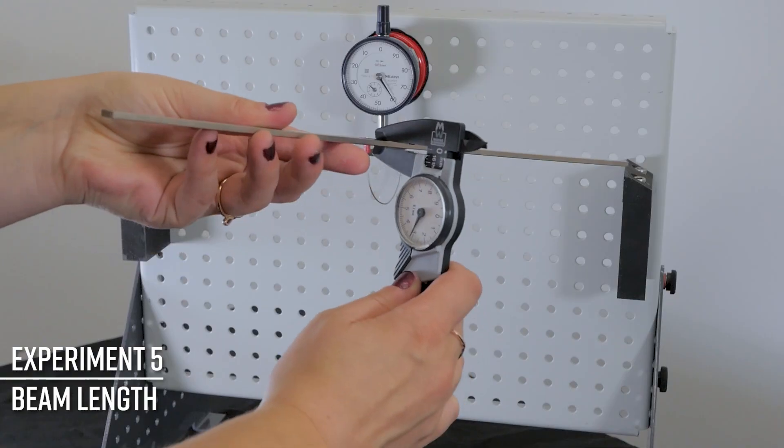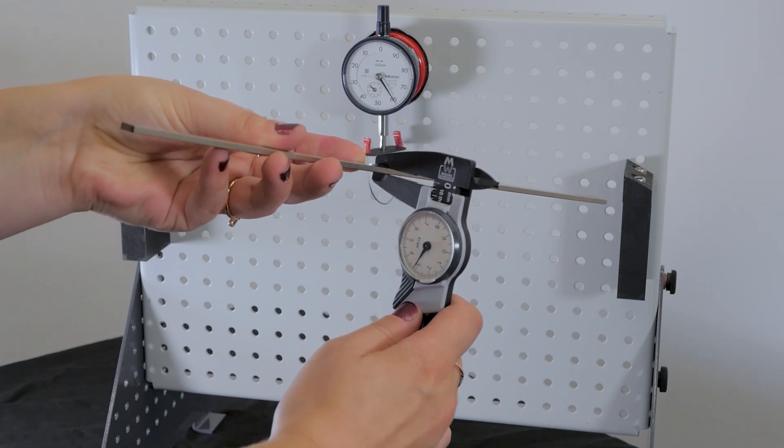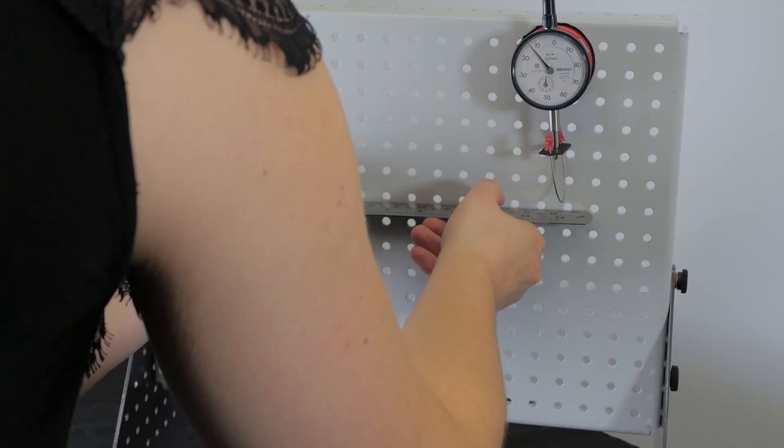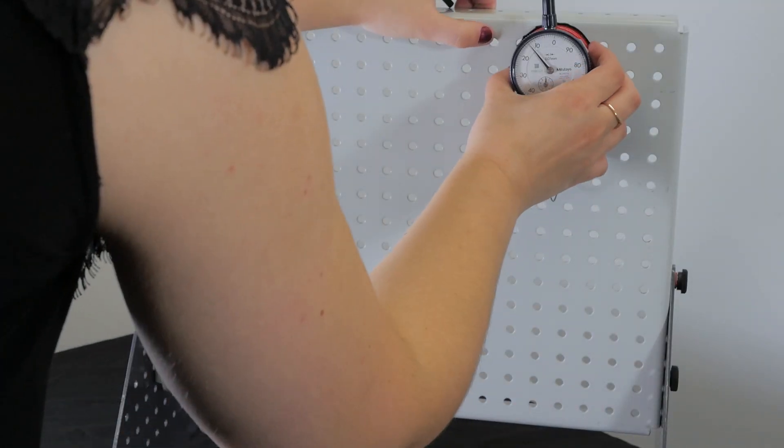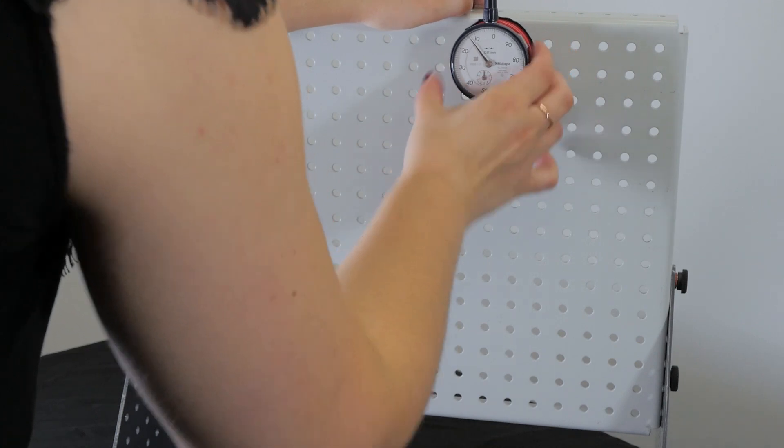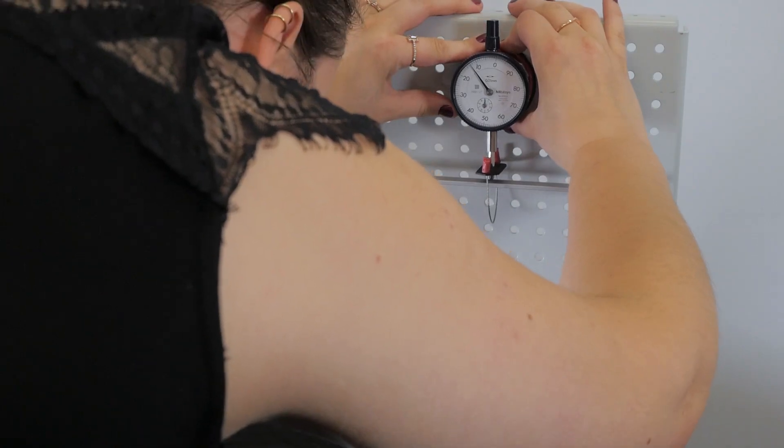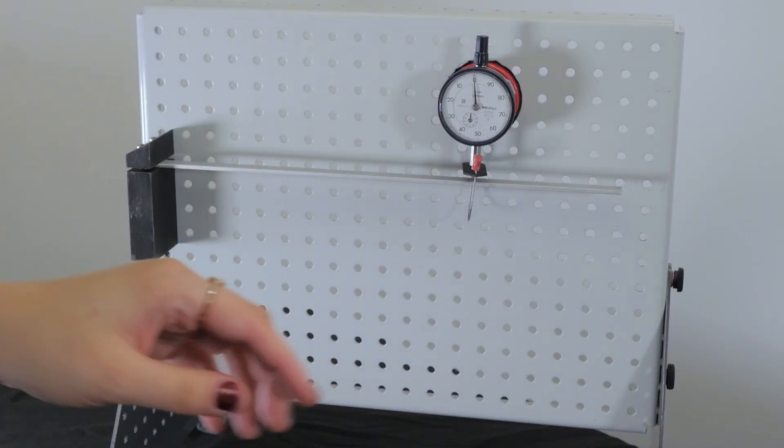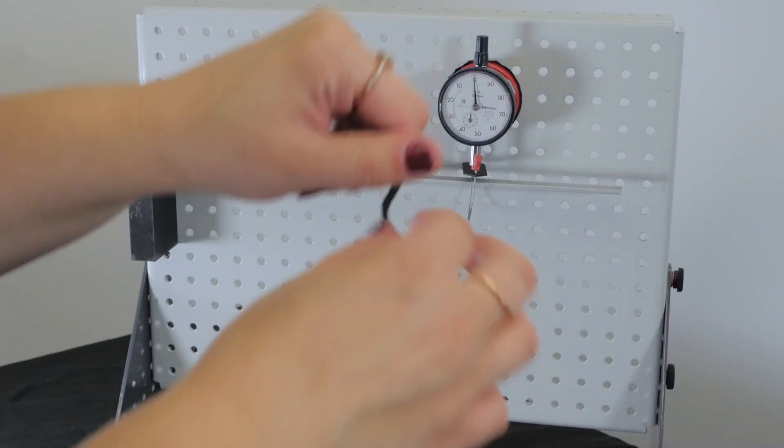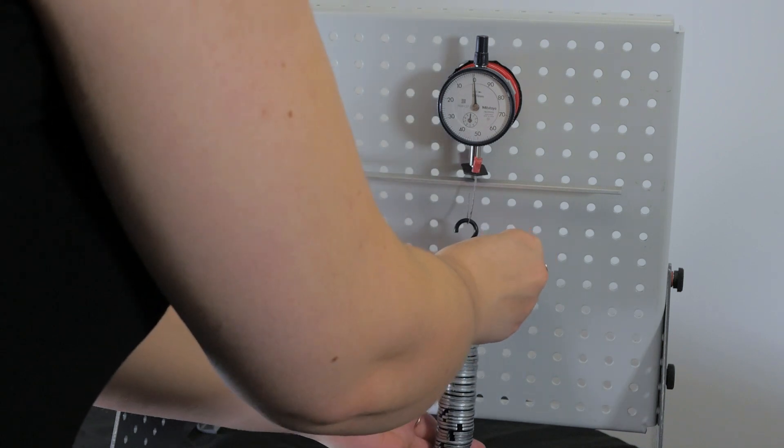Experiment five, beam length, shows the relationship between beam length and deflection. After measuring the beam dimensions with the dial caliper gauge and calculating the I value for the beam, adjust the dial indicator and wire stirrup to the end of the beam at 250 millimetres. Set and zero the dial indicator, then add the weight hanger with 49 weights or 500 grams. Tap the work panel to reduce the effect of friction.